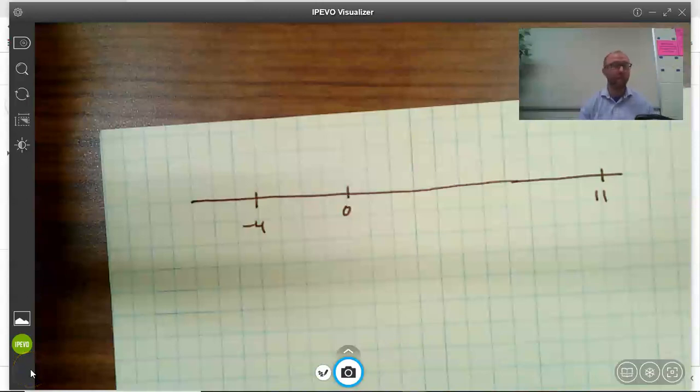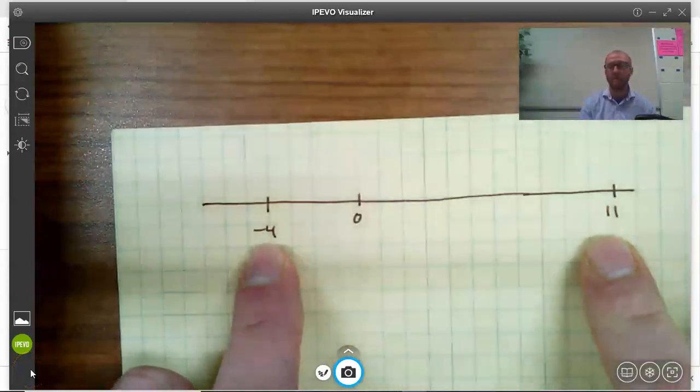In this problem, we're asked to find first what number is exactly halfway between negative 4 and 11. So let's start with that.